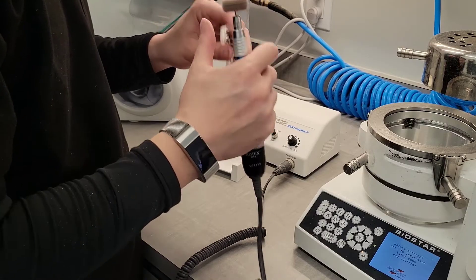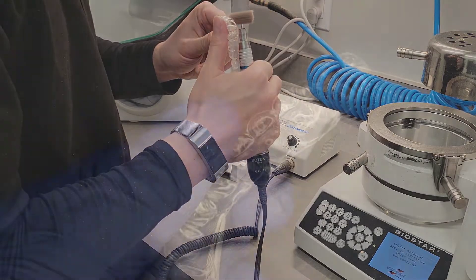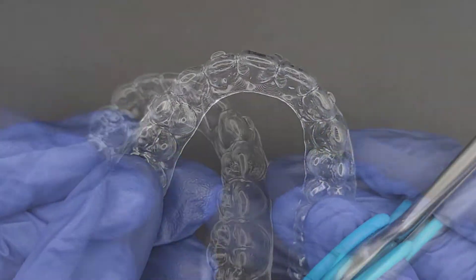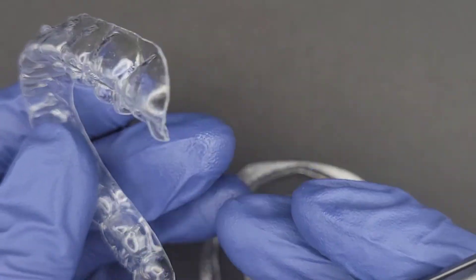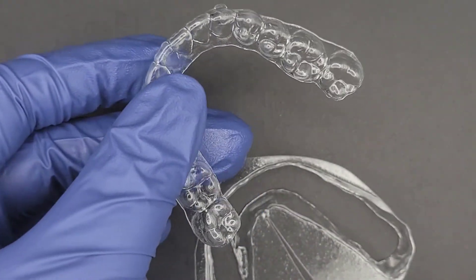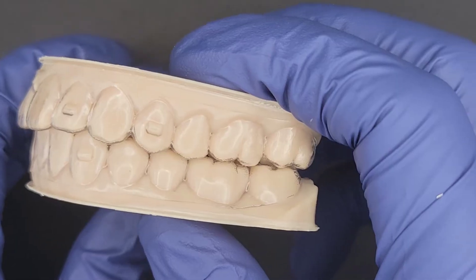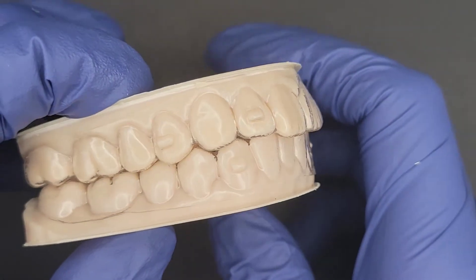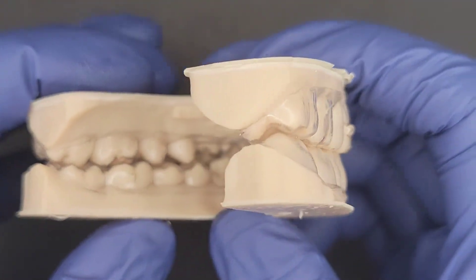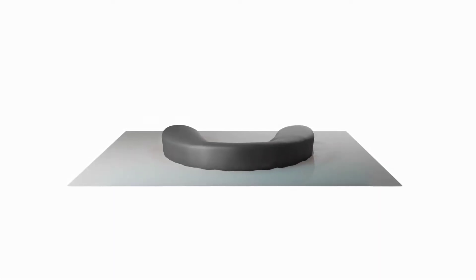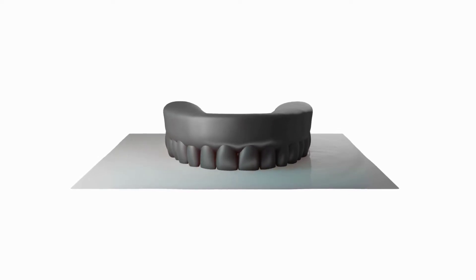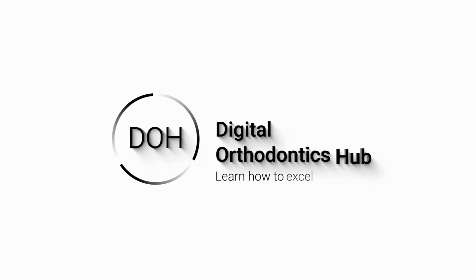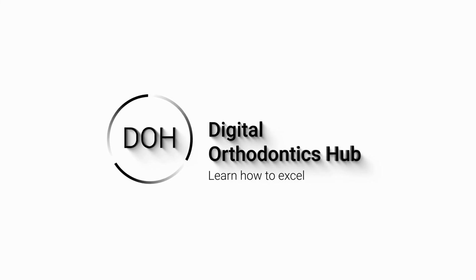Once you finish polishing your aligner, take a final look around and feel for any more rough spots. Trim or polish any spots that you see. And once it looks good, it's ready to be washed and delivered. I'll see you next time.